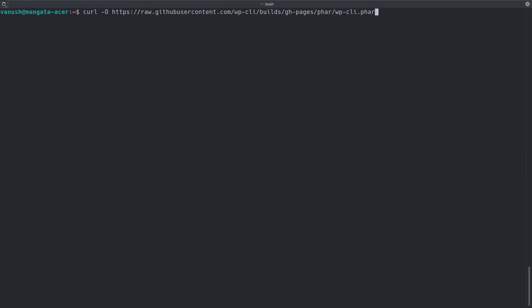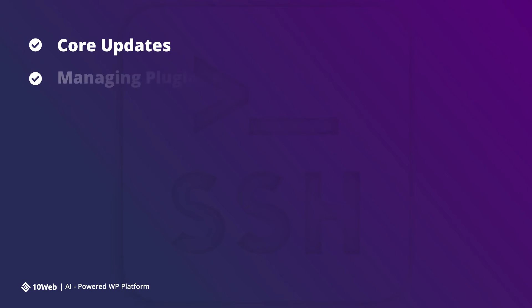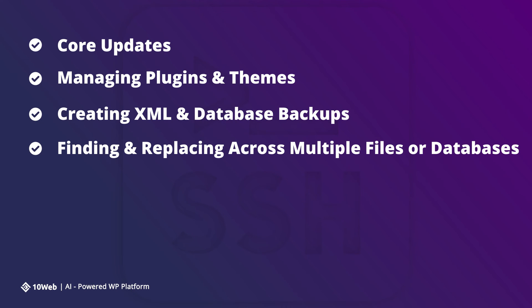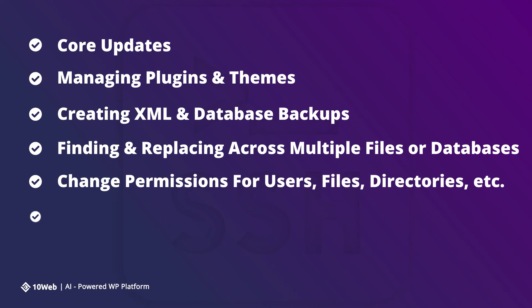It's a great place to start. Getting started with WordPress CLI is very simple — all you need is just a couple of lines of code in the terminal to install it. And once connected through SSH to the WordPress CLI, you have fast, secure access to all the files and directories in the WordPress installation. It provides an efficient way to perform or even automate certain tasks such as core updates, managing plugins and themes, creating XML and database backups, finding and replacing across multiple files and databases, changing permissions for users, files, directories, and moderating comments and WordPress cron jobs.